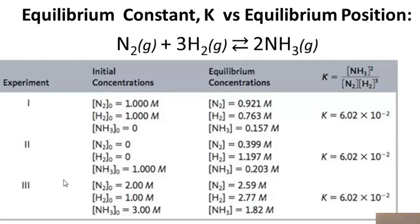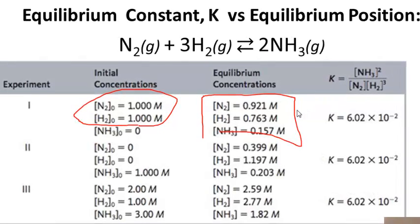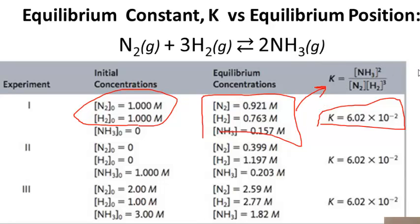In the first experiment, we only have nitrogen and hydrogen — only reactants. Those are allowed to react, and then at equilibrium, these are the three concentrations we have. When those concentrations are inserted into our K expression, the equilibrium constant is found to be 6.02 times 10 to the minus 2. The equilibrium position would be the concentrations given; the equilibrium constant is what we see in the last column.